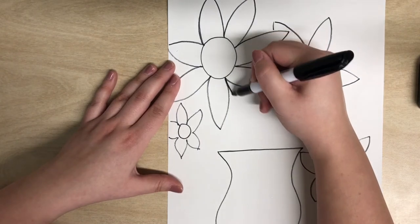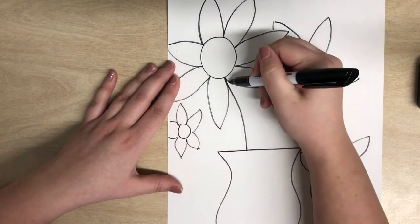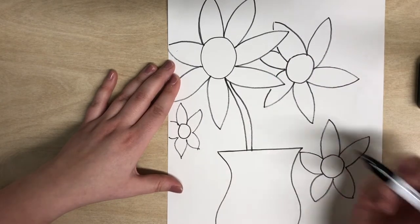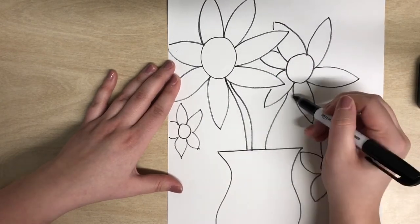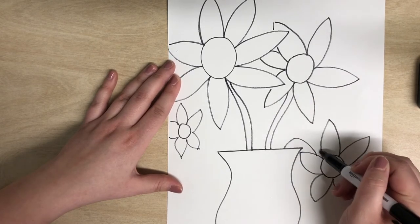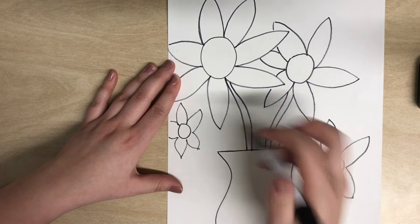To do that, I'm just going to find an opening between two petals and draw a thin, almost rectangular shape for the stems. And I'm going to do that from all of the flowers I drew. So again, that's a droopy one, and maybe this guy is a little droopy as well.